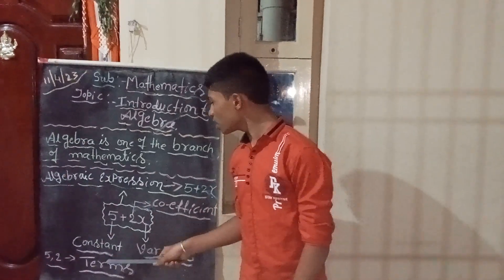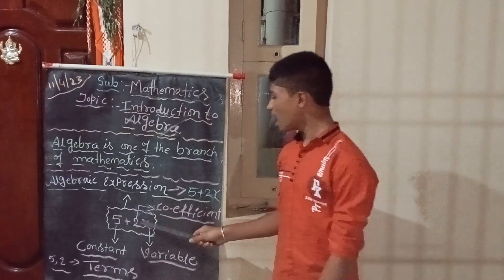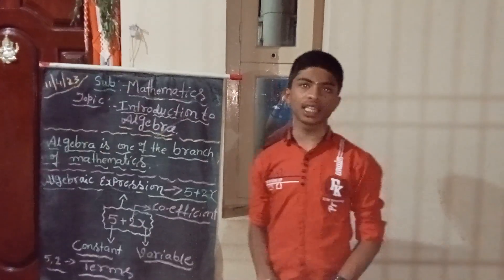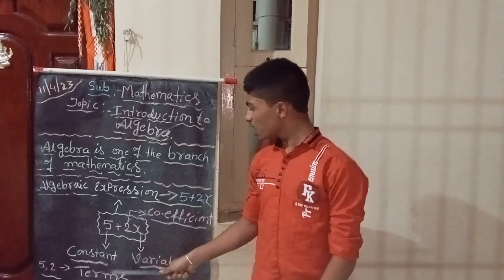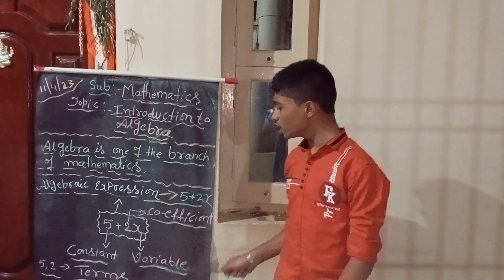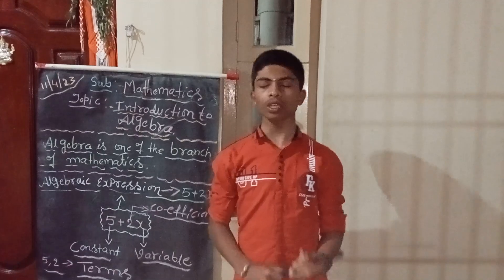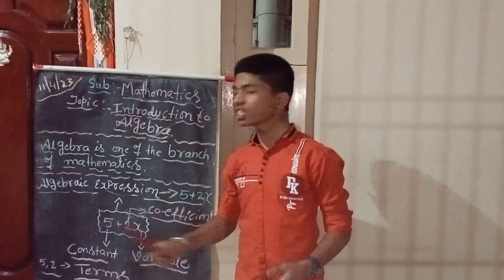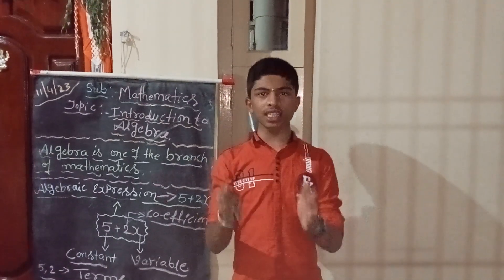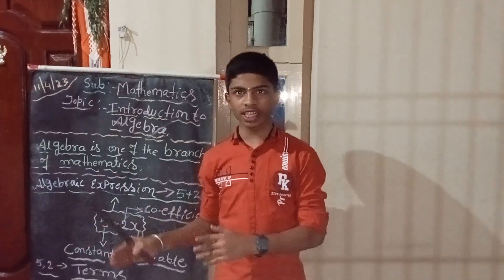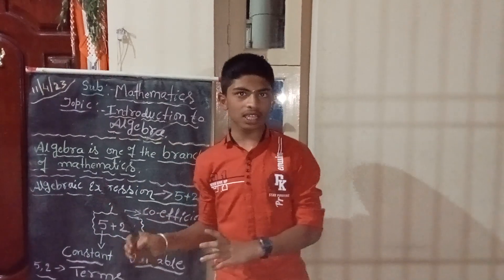Here, 5 is the constant, 2 is the coefficient, and x is the variable. Let us see the meaning of constant, coefficient, and variable. First, constant. Constant is a fixed value. It never changes — the value never changes.